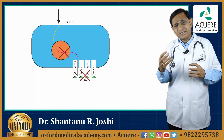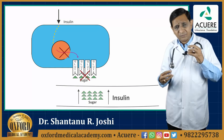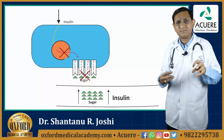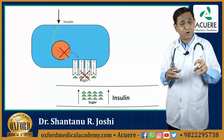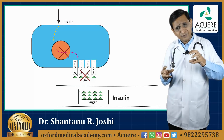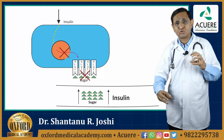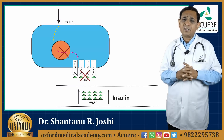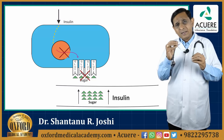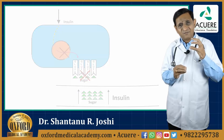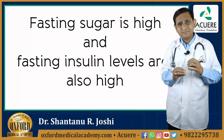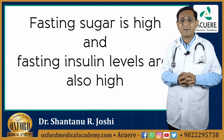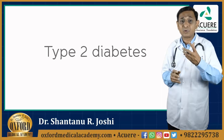This is how, in this situation, the level of insulin in the blood will rise. It is trying to stimulate the cell but the cell is not responding well. In this condition, the level of insulin is high as well as the blood sugar level is also high. And that's why when fasting sugar is high and fasting insulin levels are also high, we say that the patient is suffering from type 2 diabetes.